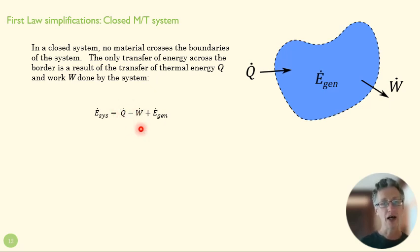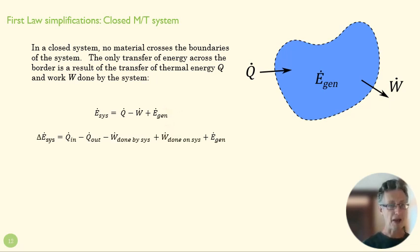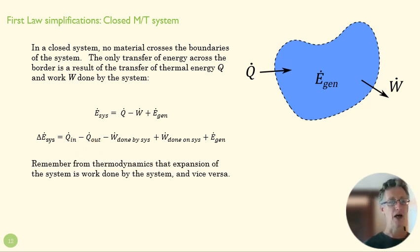We have Q, thermal energy coming in or out. We have work, if the system is doing work or having work done on it, being compressed or expanding. And then we have an energy generation term. We can expand this a little bit just to remind ourselves that Q dot means we've got a Q coming in and potentially a Q going out. We've got work done on or by the system.